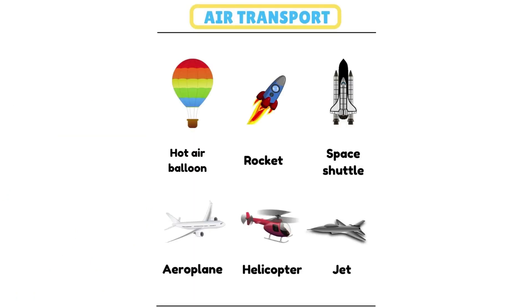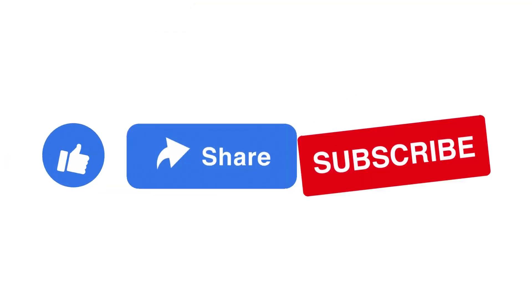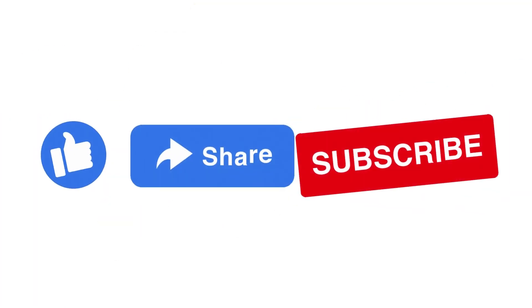Let us summarize the air transport vehicles. Here are some examples: Hot air balloon, Rocket, Space shuttle, Aeroplane, Helicopter, and Jet.